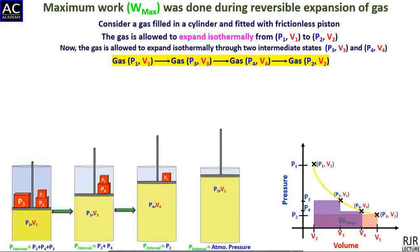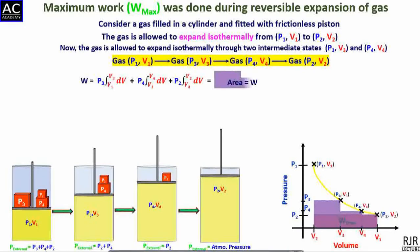Similarly, the weight exerting pressure P2 is removed from the piston. The pressure inside the gas increases further and expands until the pressure equals atmospheric pressure, attaining a final volume V2 from the initial volume V4. The work done equals the area under the curve between states P4,V4 and P2,V2, denoted by the third indigo colored rectangle. The total work done is the sum from P1,V1 through P3,V3, P4,V4, and finally to P2,V2, represented by the total indigo area, which is greater than the work done in the irreversible process represented in pink.